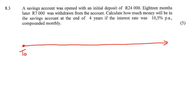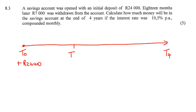We start here at the very beginning, and they want to know what happens after four years. So we start off by adding 24,000 Rand. Then 18 months is 1.5 years — one and a half years. So at T1.5, we are going to withdraw — take money out — 7,000 Rand.